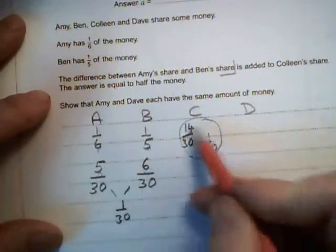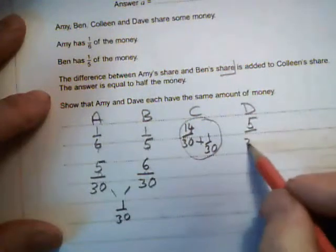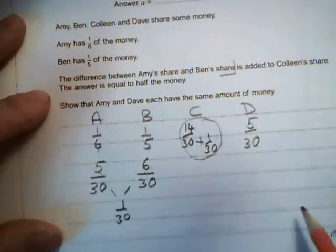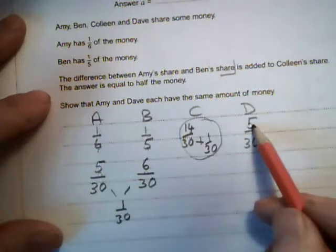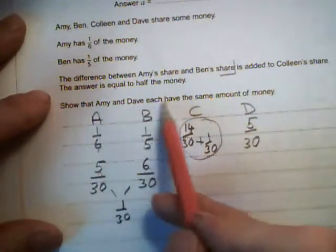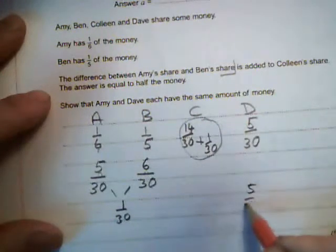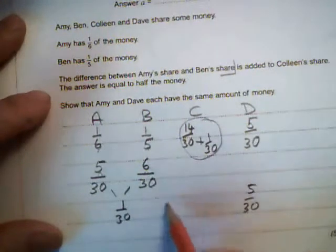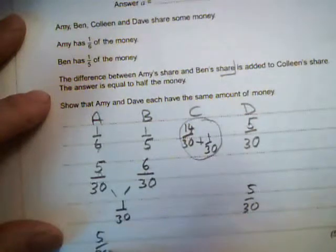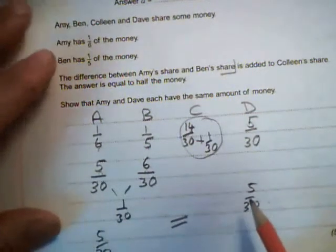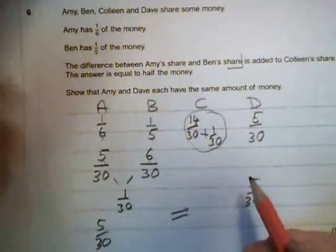25 thirtieths leaves 5 thirtieths for Dave. Show that Amy and Dave each have the same amount of money. 5 thirtieths for Dave, 5 thirtieths for Amy—they both got the same.